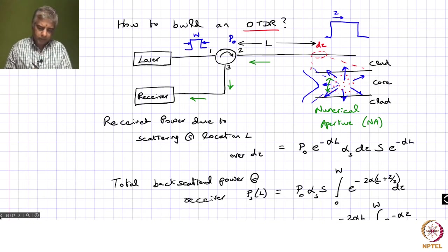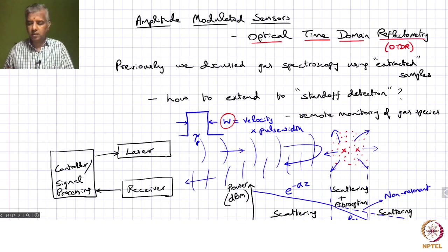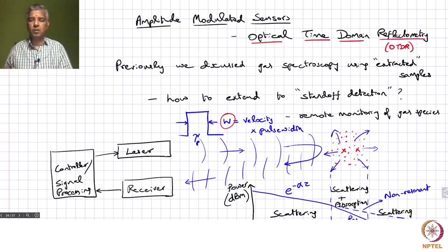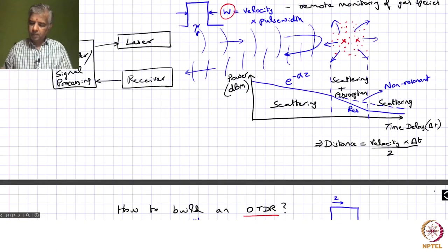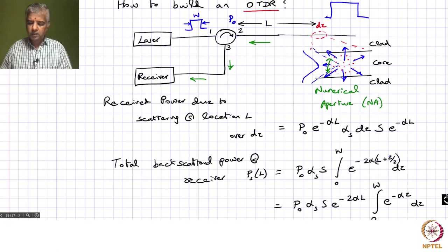We saw in the last lecture that we could do this by going to optical time domain reflectometry, where we essentially have a laser sending a pulse of light that interacts with gases at a remote location. Because of that interaction there may be some absorption in those pulses, and the back-scattered light collected at our receiver allows us to see a distribution with respect to a resonant wavelength and a non-resonant wavelength — enabling remote gas spectroscopy.